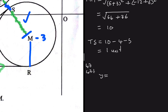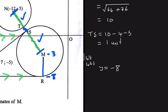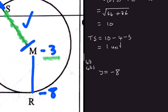To find the y-value of R, we calculate −3 minus 5 (the radius of the bigger circle), giving us −8. So the y-coordinate of R is −8, and the equation of tangent PR is simply y = −8. You could also substitute the x-value into the circle equation and confirm y = −8.